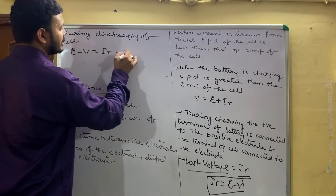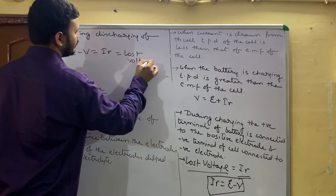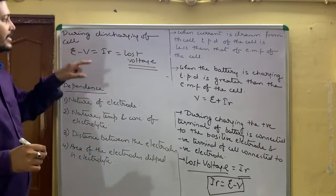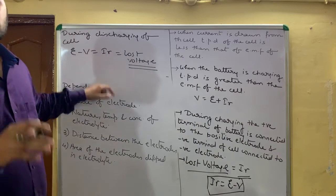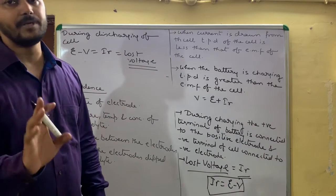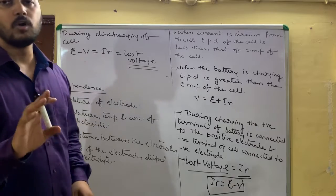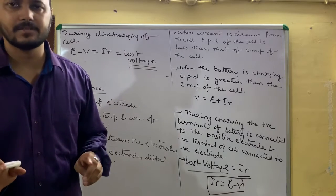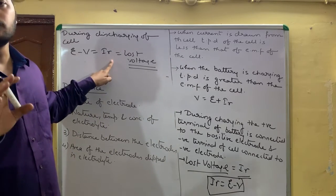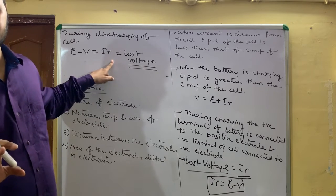E − V = IR को ही lost voltage कहा जाता है. And this voltage will not be able to be calculated by a voltmeter. इस voltage को हम voltmeter से calculate नहीं कर पाते हैं.